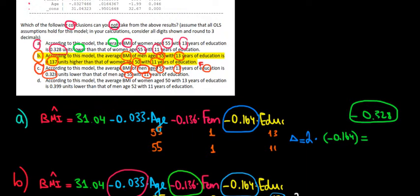So let's substitute all this data. We have to remember 55 years for both persons. Now we're having men in both cases, so the gender dummy variable is going to be 0 for both cases, and the years of education are 13 versus 11.